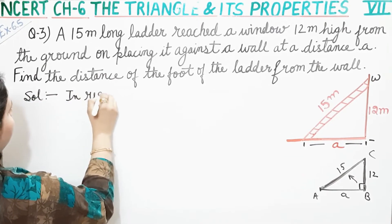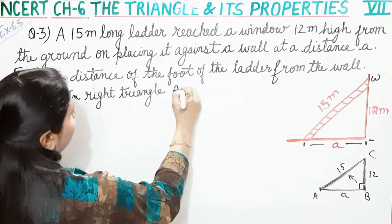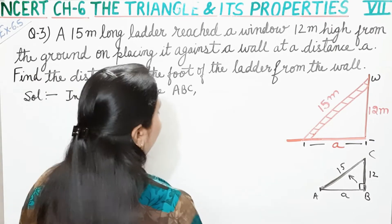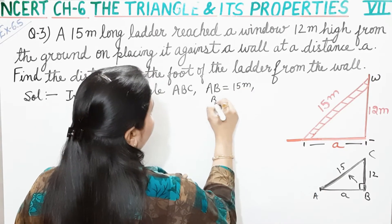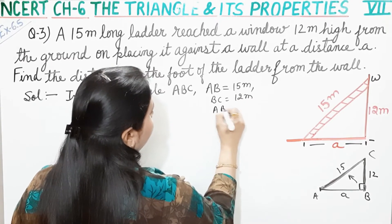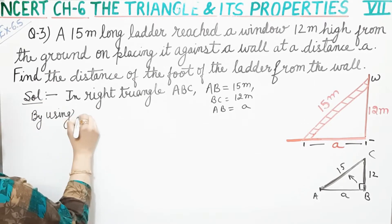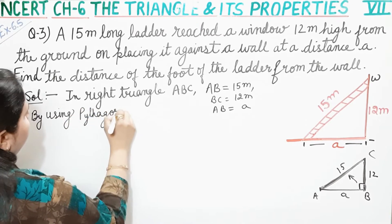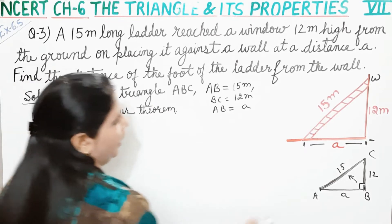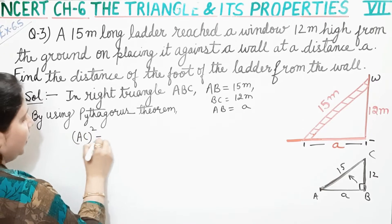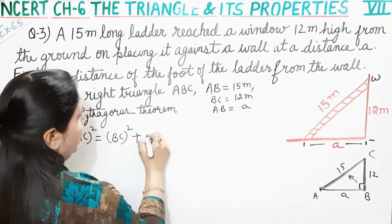So, in right triangle ABC — isme given kya hai? AB kitna hai? AB hai 15 meter, BC hai 12 meter, aur AC hame nikalna hai. To by using Pythagoras theorem, jo kehti hai ki hypotenuse ka square — toh yahan par hypotenuse kya hai? AC ka square — yani ki AC ka square is equal to sum of the square of the remaining two sides, yani ki BC ka square plus AB ka square.